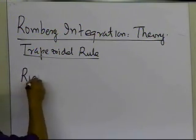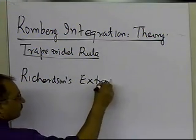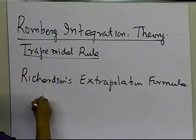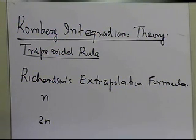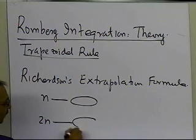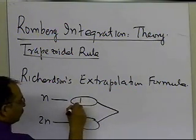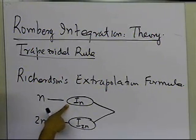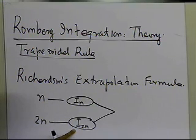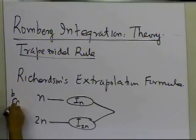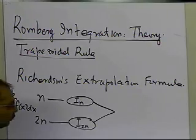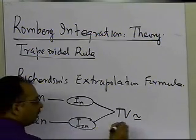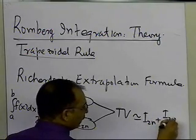As we have seen, we already talked in the last segment about Richardson's extrapolation formula. In Richardson's extrapolation, we said that if we have n segments and somebody is using 2n segments for the trapezoidal rule, we can take those two values — calling them I-sub-n and I-sub-2n — and find a better approximate value for the integral from a to b of f(x)dx. That better value is: I-sub-2n plus (I-sub-2n minus I-sub-n) divided by 3.